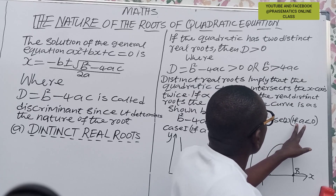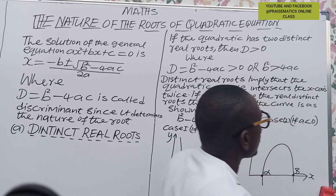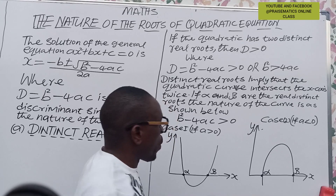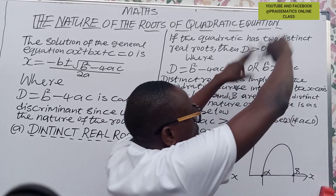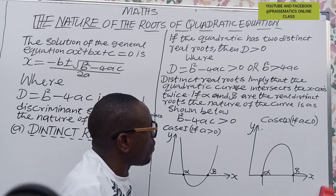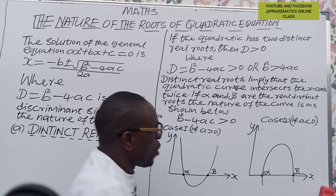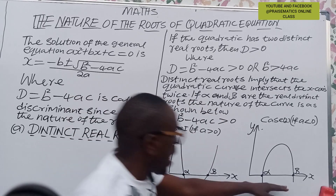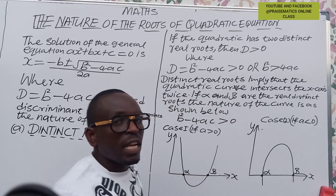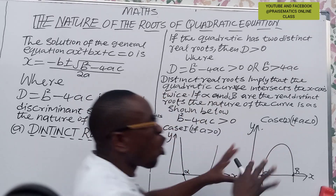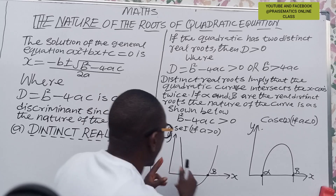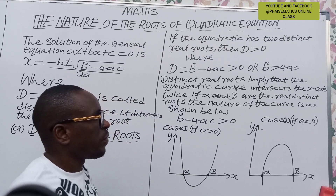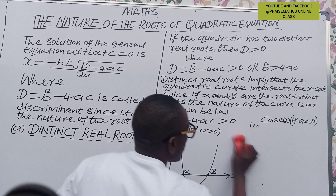Case two: if a is less than zero, the graph will be a concave-down (inverted) curve, where alpha and beta are still cut across the x-axis. So case two shows the concave-down graph, while case one shows the concave-up graph.